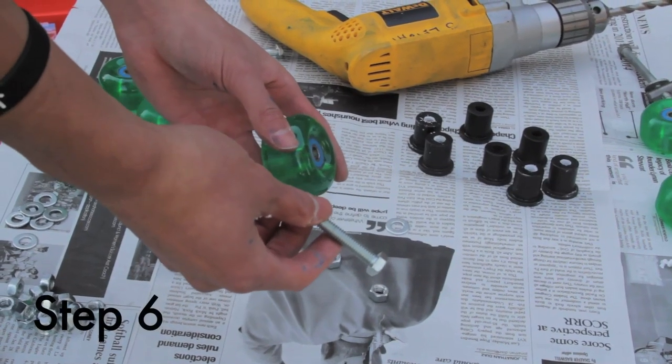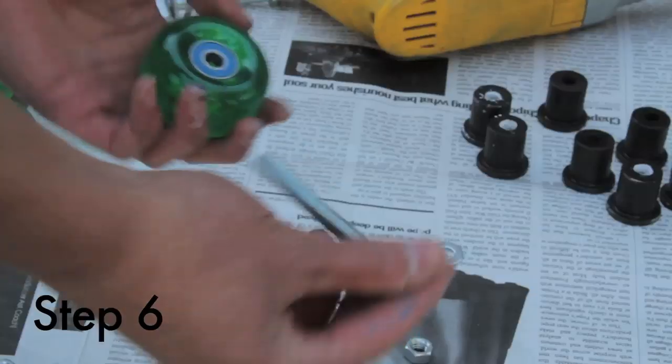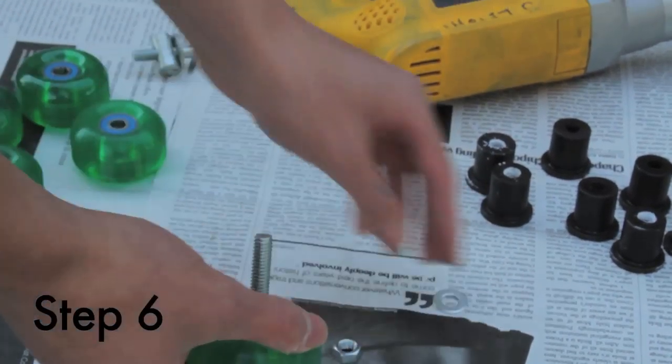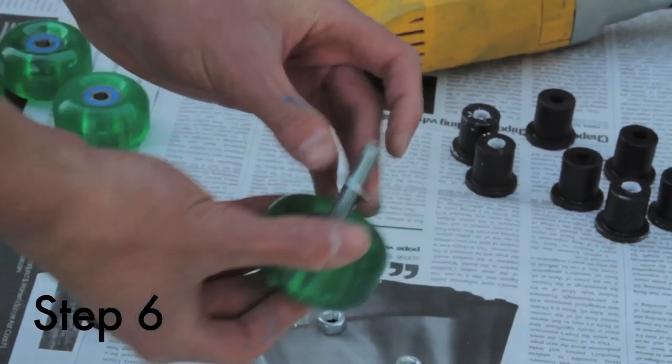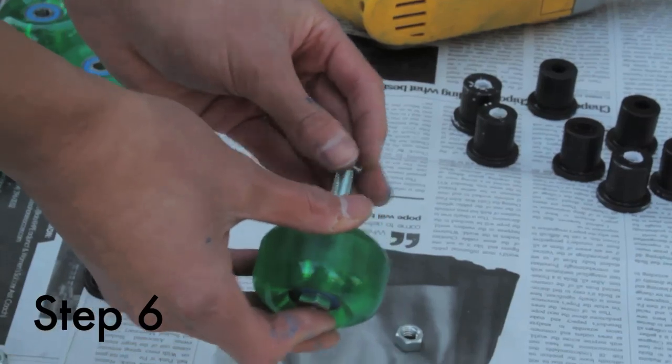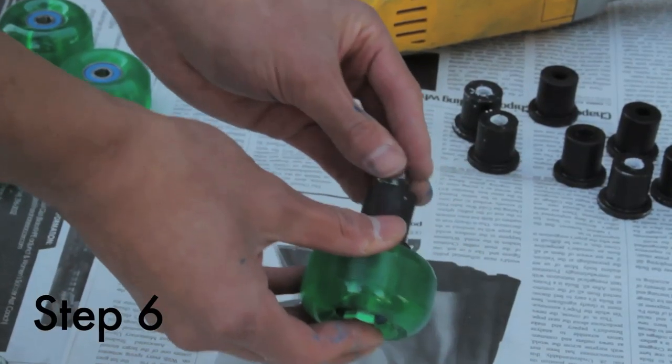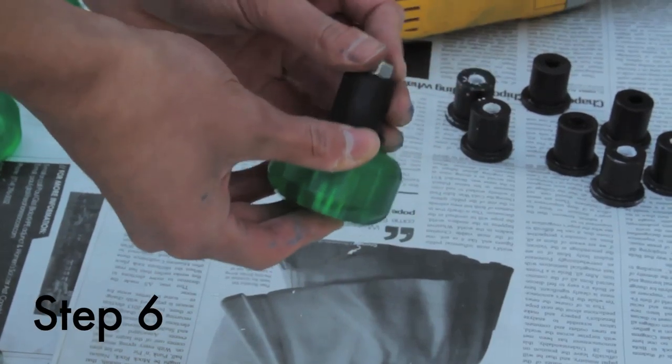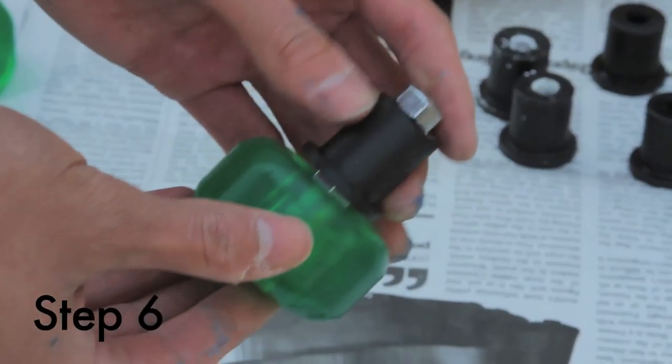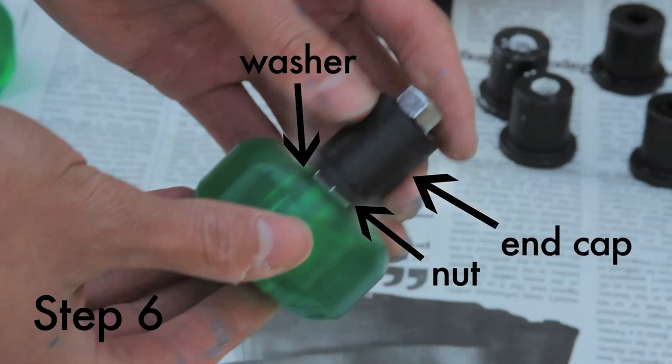Now let's assemble our wheels. First put your bolt through the wheel, followed by a washer, then a nut, an end cap, and then another nut. So that's a washer, then a nut, an end cap, and then finally another nut.